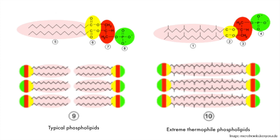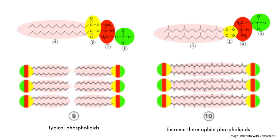In order to survive and reproduce there, their phospholipids have three adaptations. One, they don't have ester linkages but even stronger ether linkages. Two, branches on the fatty acids allow them to form cyclopentane rings that cross-link the hydrocarbons together. And three, instead of forming a bilayer, they have a monolayer of lipids with phosphate groups at both ends.